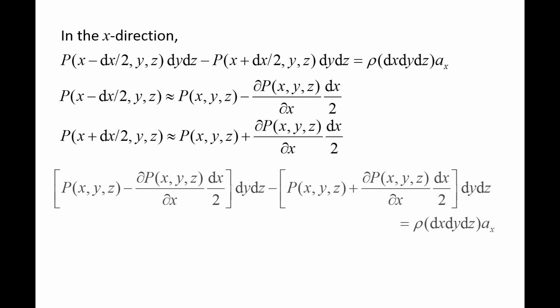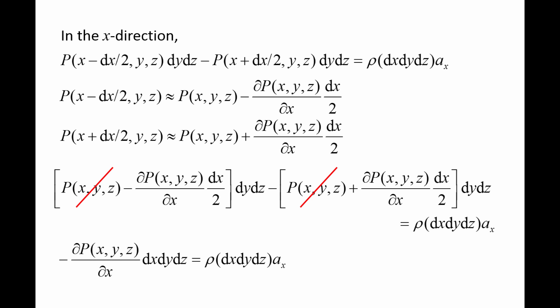Plugging these expressions into the equation of motion, we see that the pressure at x, y, z drops out. We can also eliminate dx, dy, dz from both sides of the equation, and we are left with negative partial p partial x evaluated at x, y, z equals rho times ax.